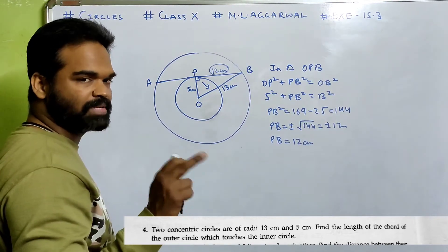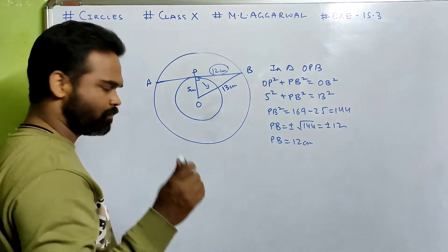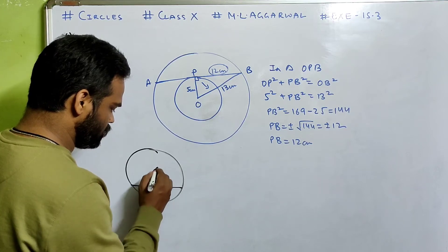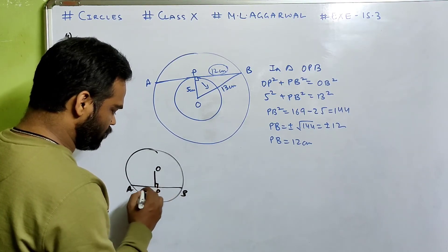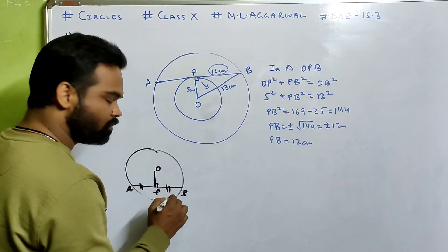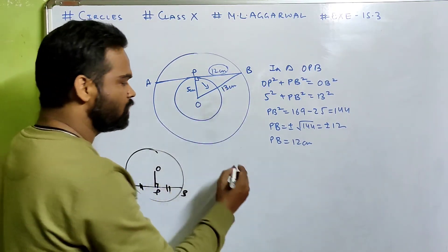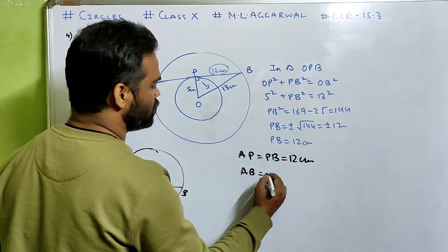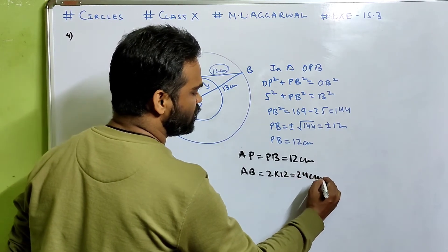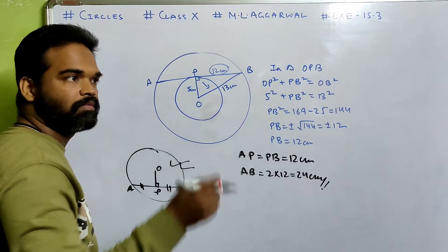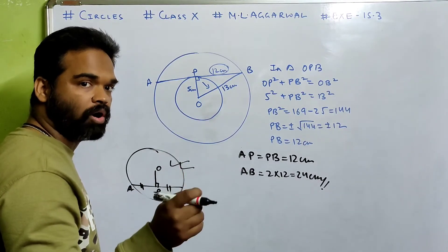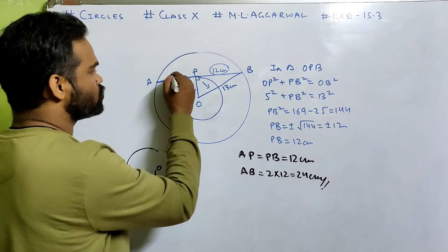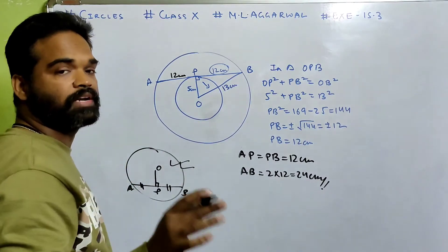OP is perpendicular to AB, and AB is the chord. From class 9 chord properties: if from the center you drop a perpendicular on a chord, the perpendicular bisects the chord. So AP = PB = 12 cm, which means AB = 2 × 12 = 24 centimeters. Done.